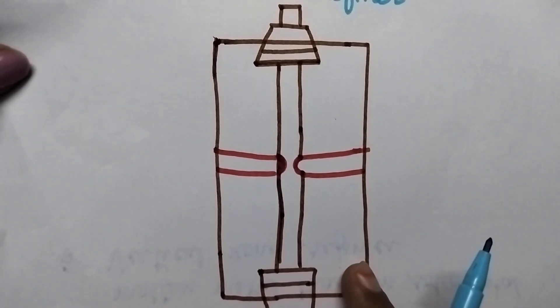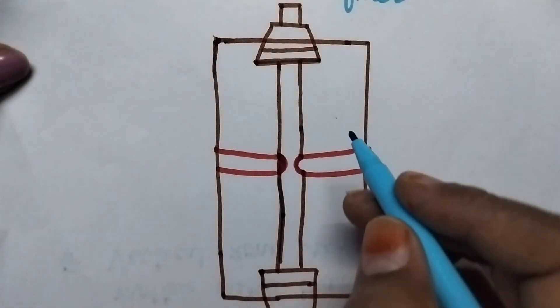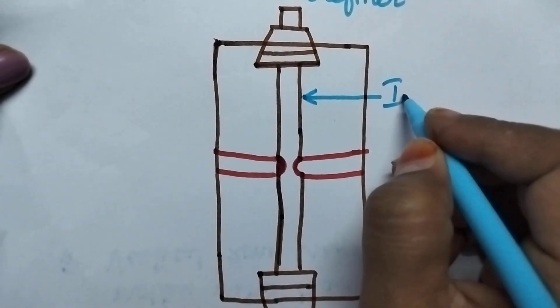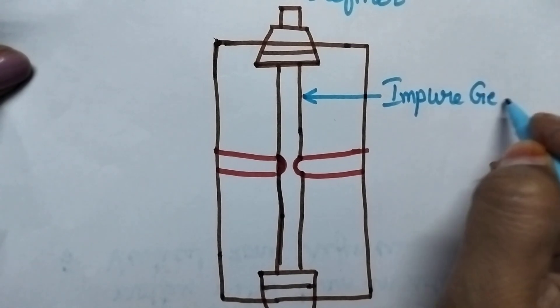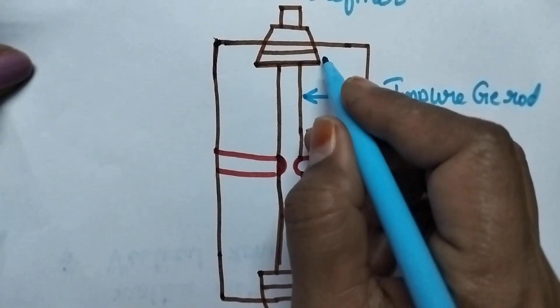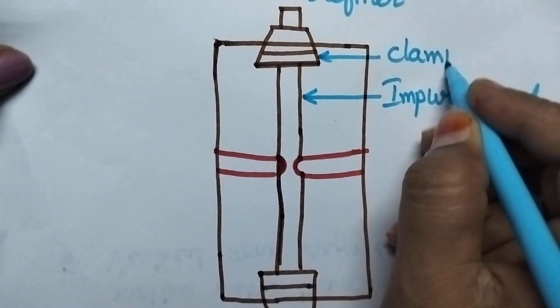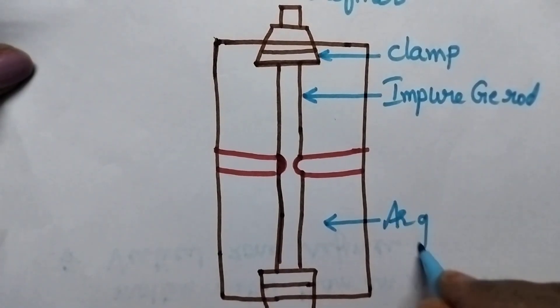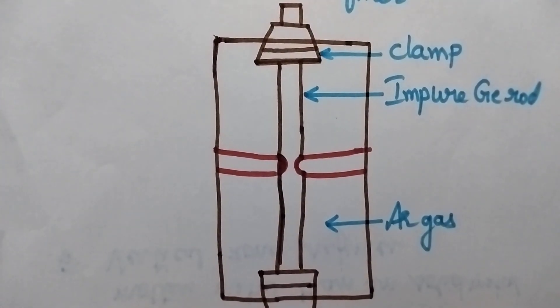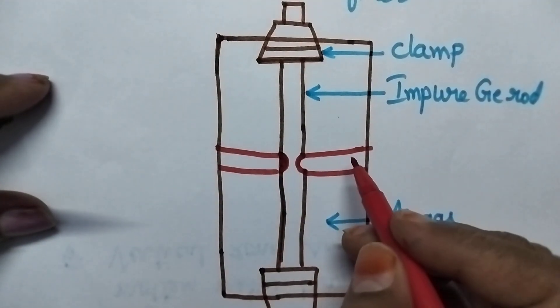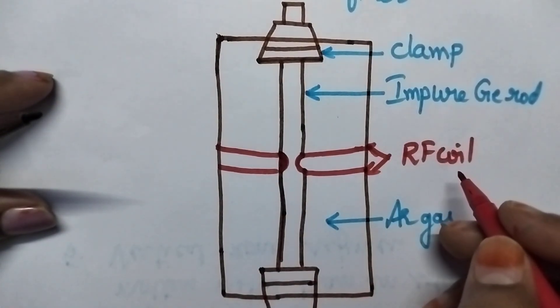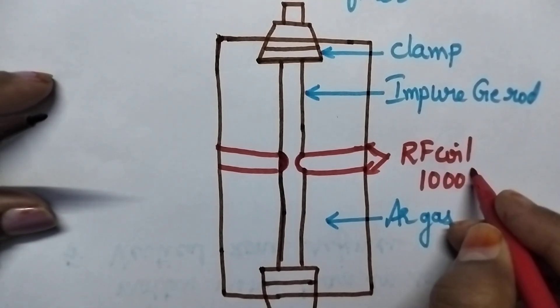It is the vertical zone refiner which is used for the zone refining process of impure germanium. Initially, the impure germanium rod is clamped in the vertical zone refiner with the help of a clamp. The inert atmosphere is maintained with the help of argon gas, and high temperatures will be maintained with the help of an RF coil. With the help of the RF coil, it is possible to maintain 1000 degrees centigrade.